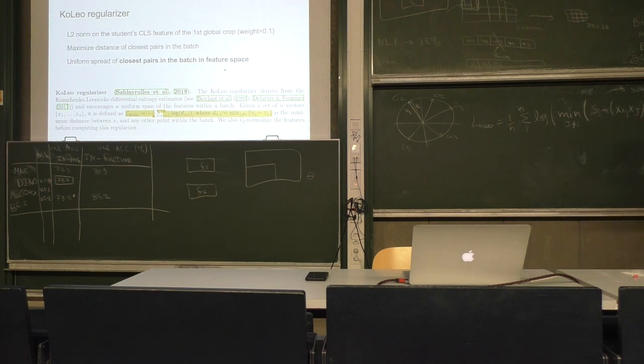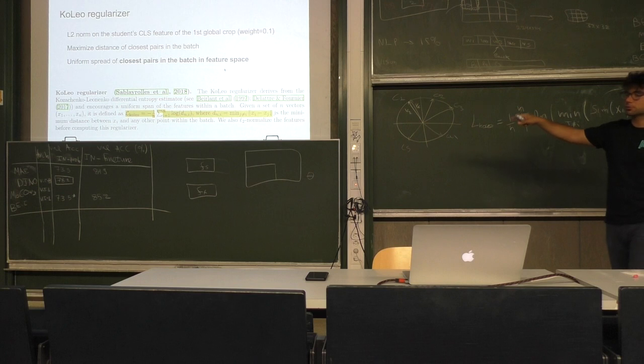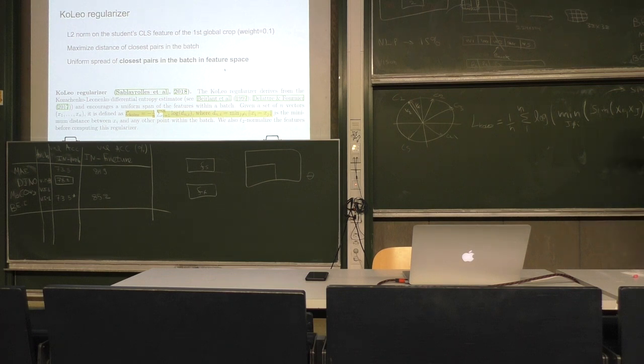Everything is again L2 normalized. Since we have this regularization and want to include it as a loss function, can you guess if xi and xj come from the student or teacher? This is a loss function, so we want to propagate gradients. We need to consider the student outputs, as opposed to centering and SinkhornKnopp normalization where we do this on the teacher's side.